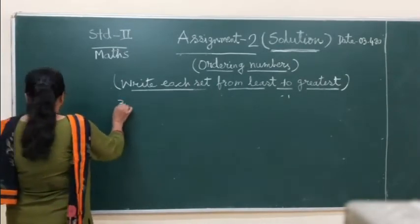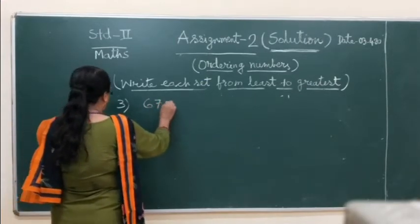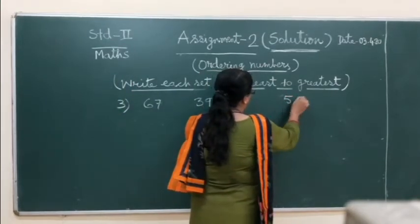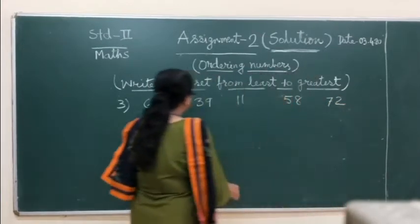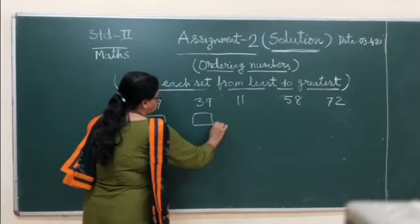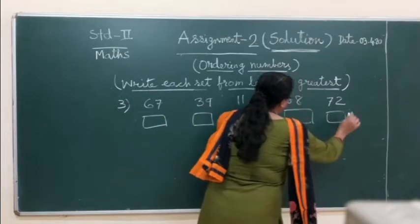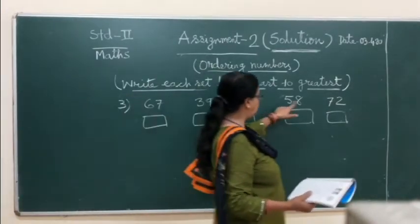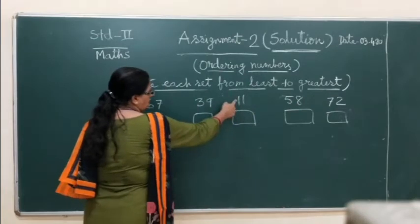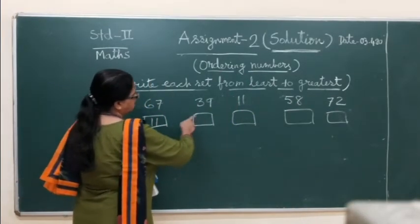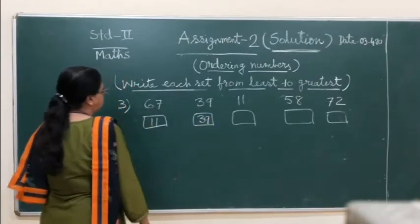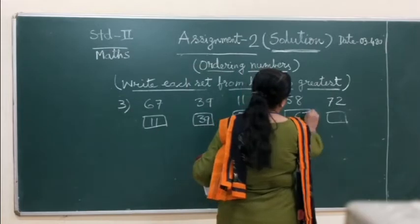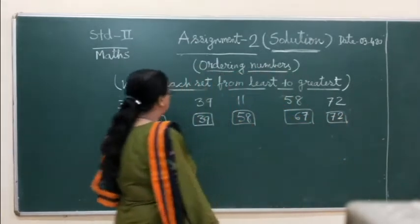That is number 3: 67, 39, 11, 58, and 72. We will check the first number. First this is 6, 3, 1, 5, 7. So 1 is here, so 11, then 3, that means 39, then 5, so this is 58, then 6, 67, and last one is 72. So this way we will solve, smallest to greatest.